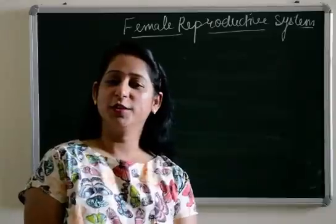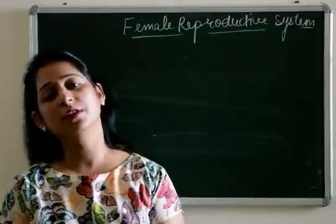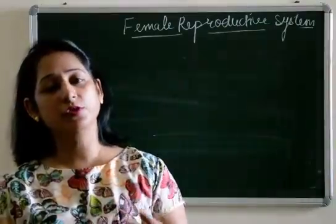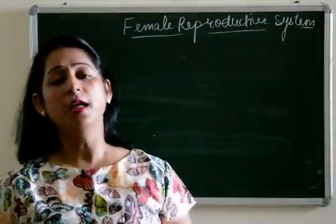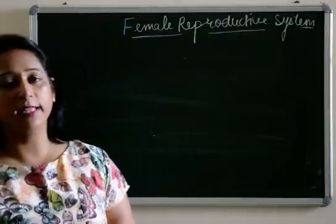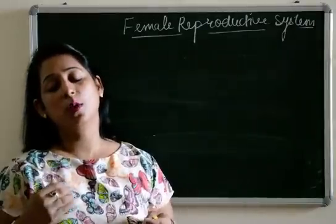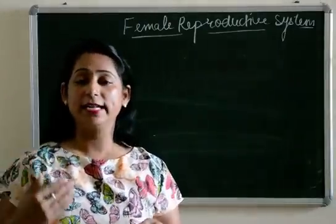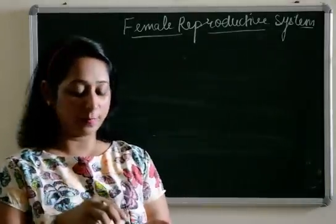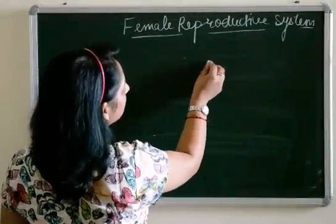Hello everyone. Today I will be taking up the topic of the female reproductive system. This video is in continuation to the topic of reproduction, where I have discussed different definitions and the reproductive system. Now I am going to discuss the female reproductive system. As we did with the male, there are two types of parts: primary parts and accessory parts. The primary ones directly take part in reproduction, and the accessory ones just assist the process.